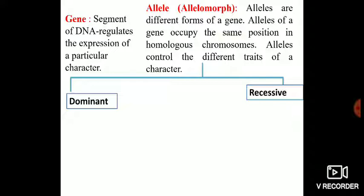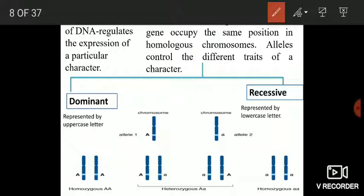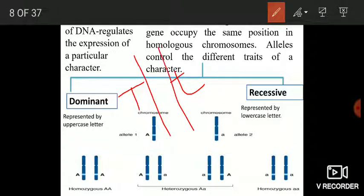Now, allele or allelomorph — alleles are different forms of a gene. These alleles occupy the same position in homologous chromosomes. The alleles control the different traits of a character. For example, we have gene T and gene t; they occupy the same locus on homologous chromosomes.